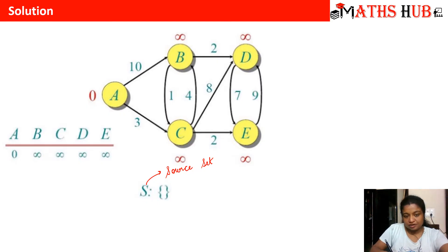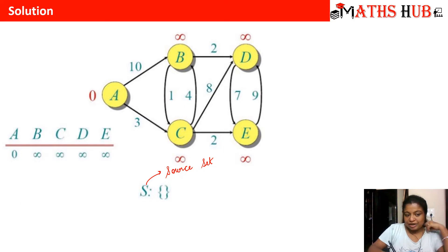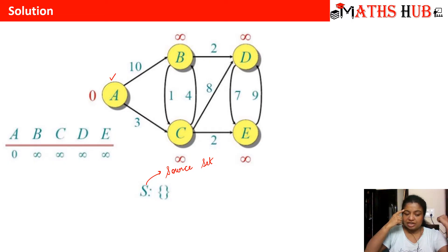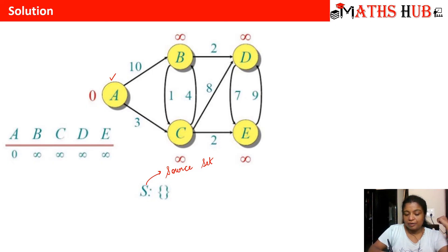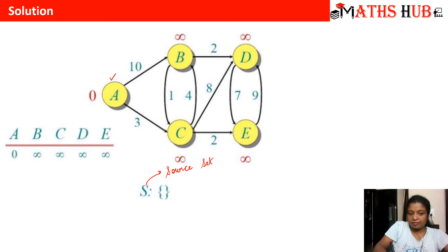Since we have to find the shortest path, we will select the vertex which gives us the shortest path from the source vertex. Initially, we will write all the vertices A, B, C, D present in the graph. Since we have to calculate the shortest distance from vertex A, we will write zero under vertex A — marking it as the source vertex — and under all other vertices we will write infinity, meaning the distances have not been identified yet. Once we improve the distances, we will write them below. This is step number one: the source set is empty and no distances are mentioned yet.